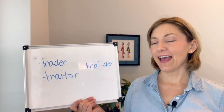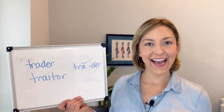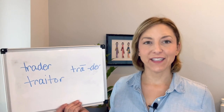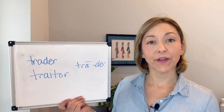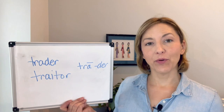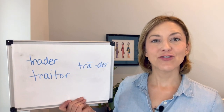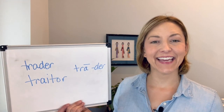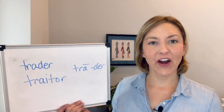Then we're going to end with that long A sound. To do this, your mouth opens wide, the tip of the tongue is low, the back is pulled up, and then your tongue moves to high and flat with smiling lips — 'tr-ay.'